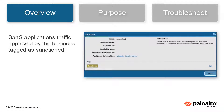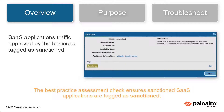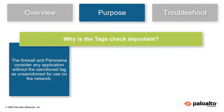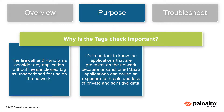Applications can be tagged as sanctioned to differentiate sanctioned SaaS application traffic, which is approved by the business, from unsanctioned SaaS application traffic. The sanctioned applications best practice check ensures sanctioned SaaS applications are tagged as sanctioned. The firewall and Panorama consider any application without the sanctioned tag as unsanctioned for use on the network. It's important to know the applications that are prevalent on the network because unsanctioned SaaS applications can cause an exposure to threats and loss of private and sensitive data.